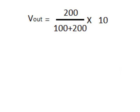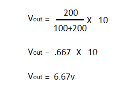Output voltage equals 200 ohms divided by 100 plus 200, which is 300, times input voltage 10 volts. And 200 over 300 is 0.666 repeating, so we'll round that to 0.667 times 10 volts. And the output voltage is 6.67 volts.